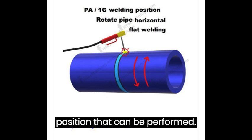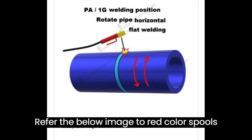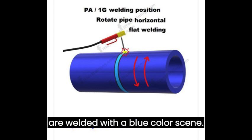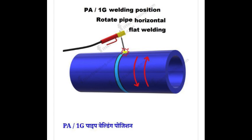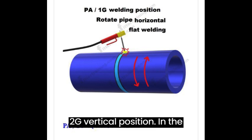Welding is performed on the top surface of the pipe. This is the most basic pipe welding position. Refer to the image below — the red color spools are welded with a blue color seam.